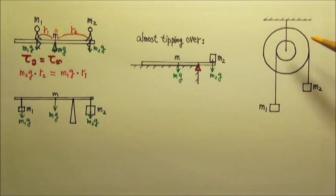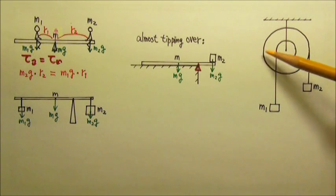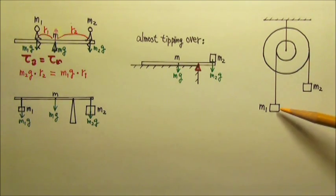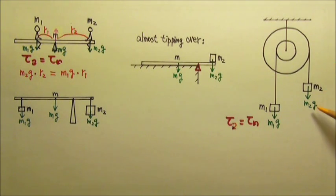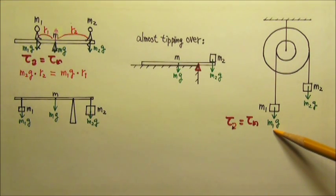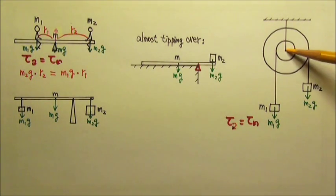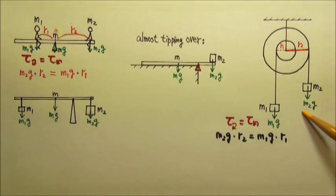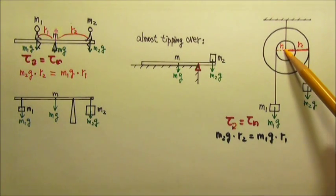The same approach works for this wheel. If the mg of the wheel is at the center — that's the axle — then the mg of the wheel produces no torque. The torque is produced by M1g and M2g. If the wheel is not rotating, then the clockwise torque produced by M2g equals the counterclockwise torque produced by M1g. The torque is force times lever arm, where the lever arm is the perpendicular distance from the line of force to the axis. So for M2g, the lever arm is the bigger radius R2, and for M1g it is the smaller radius R1.